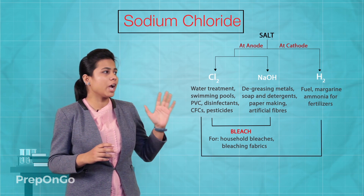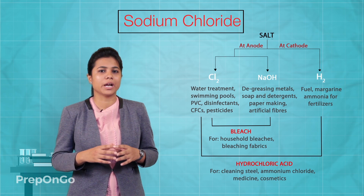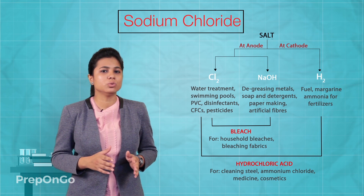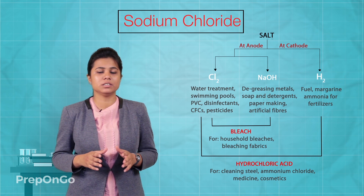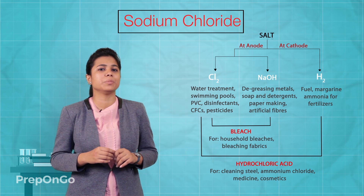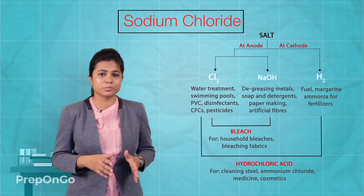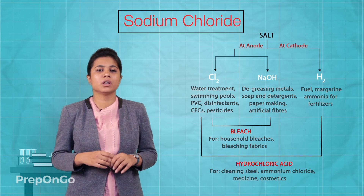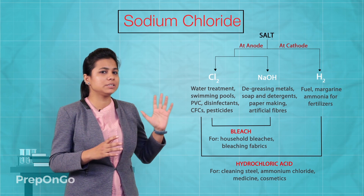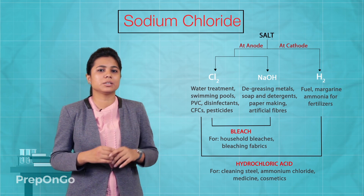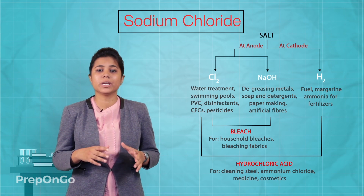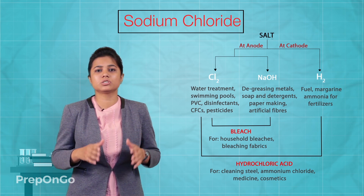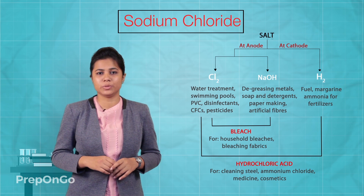Hydrogen and chlorine combine to form hydrochloric acid, which is used for cleaning steels and also for making cosmetics, medicines, and ammonium fluoride. We can mix these three products with other substances to make other useful salts, which we will be seeing in our next video.